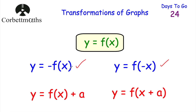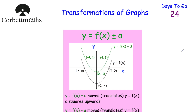Now let's look at our translations. If we sketch y equals f of x plus a, where the plus a is outside the brackets, that translates the graph a squares upwards. Using a different quadratic graph, f of x plus 3 translates it three squares upwards. So all points move three squares up: minus 4, 0 goes to minus 4, 3; 0, negative 4 goes to 0, negative 1; and 4, 0 goes to 4, 3.